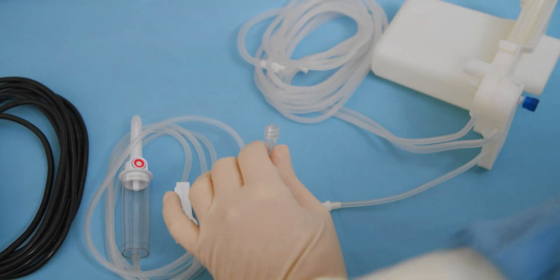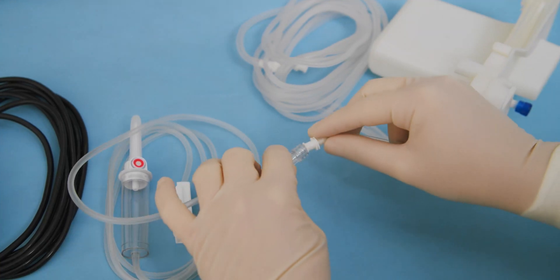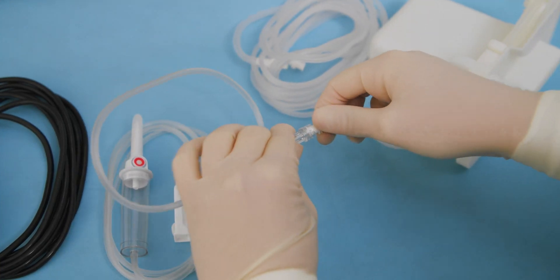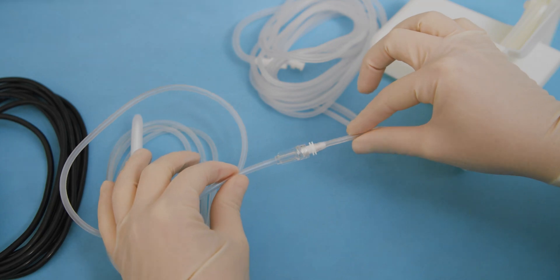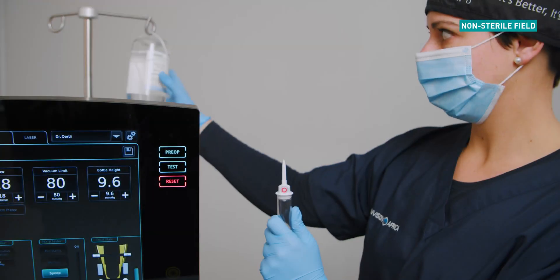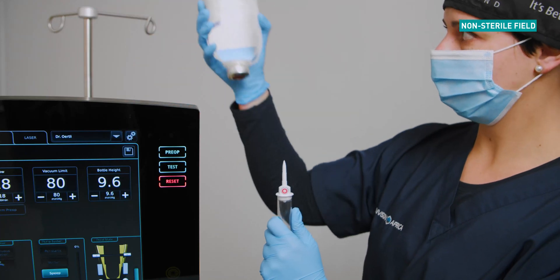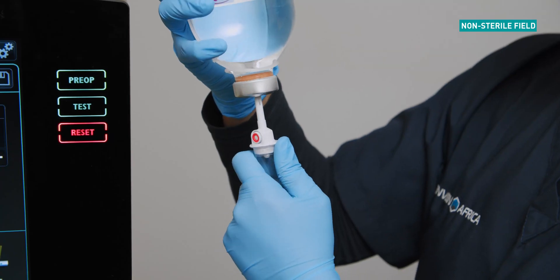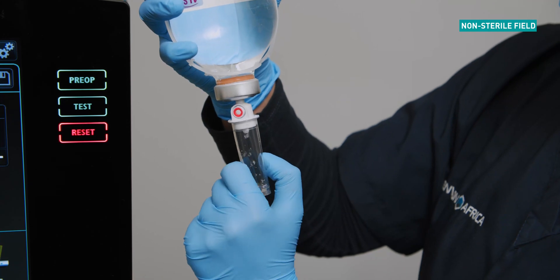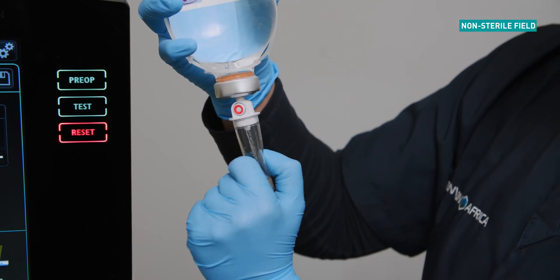Connect the admin set to the infusion port of the OS 4 set. Connect the infusion set to the BSS bottle. Fill the chamber halfway with BSS by squeezing.